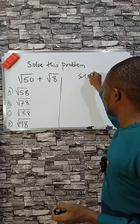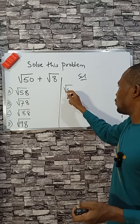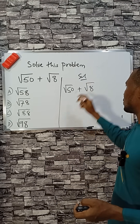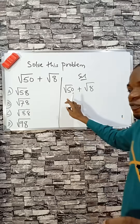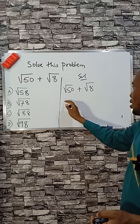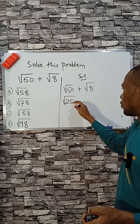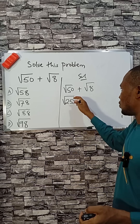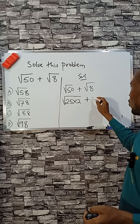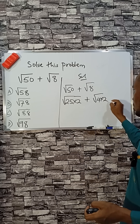Solution. Write this out as root 50 plus root 8. Now let's find a perfect square in each term. We can write 25 times 2 for 50, since 25 is a perfect square, and 4 times 2 for 8, since 4 times 2 is 8.